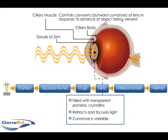The ciliary muscle controls the convexity, or outward curvature, of the lens in response to the distance of the object being viewed. This is so the eye can focus light rays incoming from varying distances.